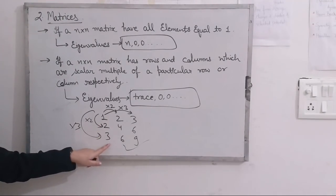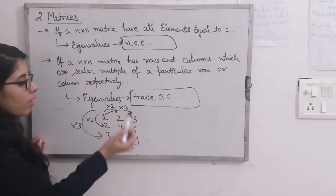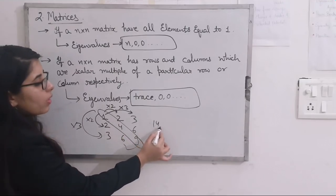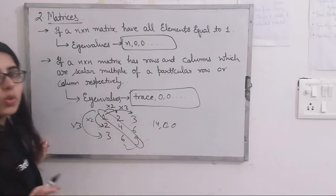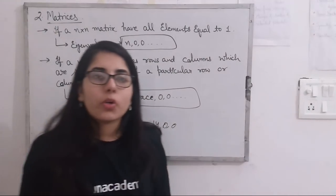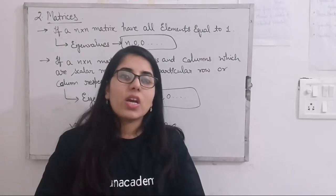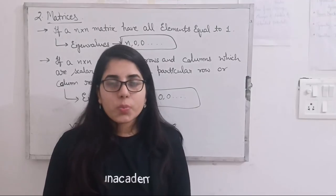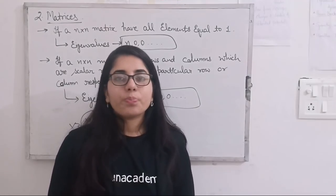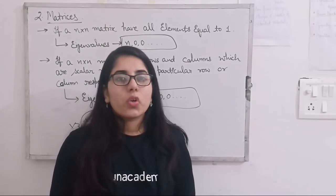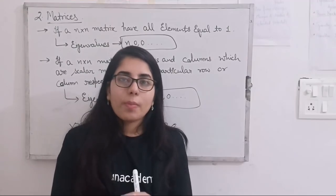For this type of scalar multiple matrix, the eigenvalues will be trace and 0, 0. The trace — sum of principal diagonal elements — is 1+4+9 = 14, so eigenvalues are 14, 0, 0. You can write this directly without solving anything if you remember this rule. Such questions have already been asked in the NET physics exam, so remember these rules as they will help you solve questions in very less time.